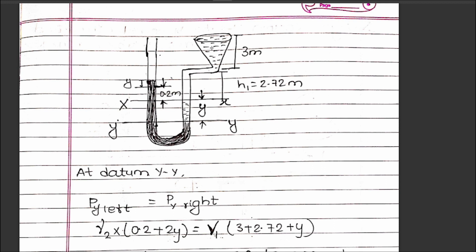The volume of the conical vessel and the pressure change must be considered. At the datum level, let the distance be y. Setting up the pressure equation: at the datum level, pressure left equals pressure right.